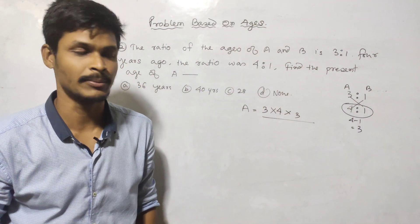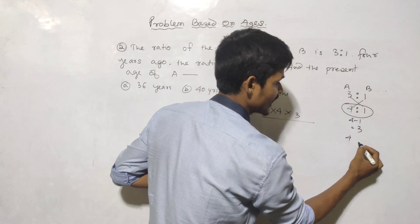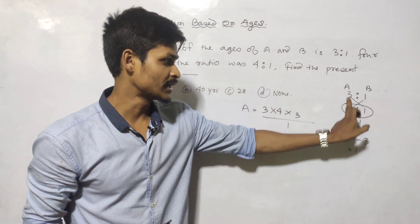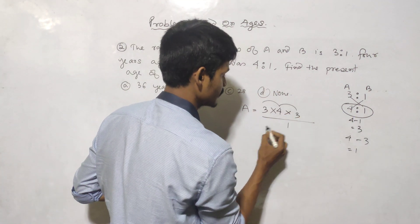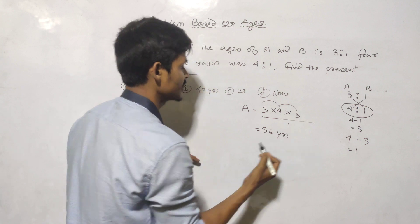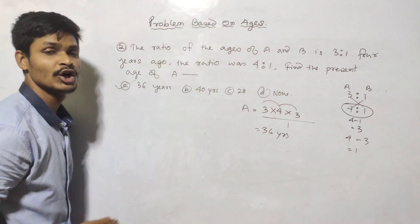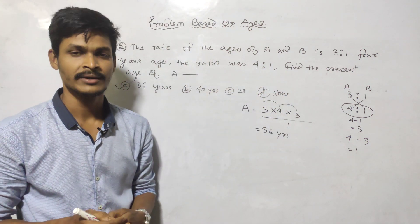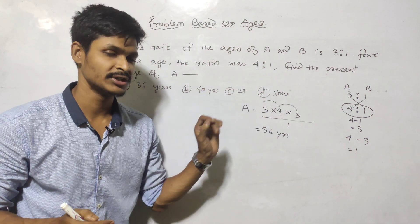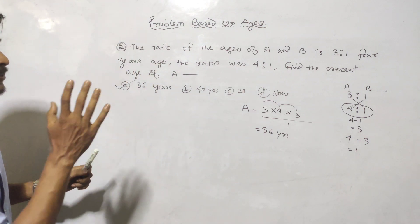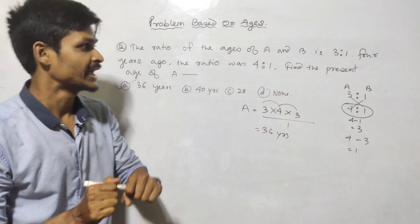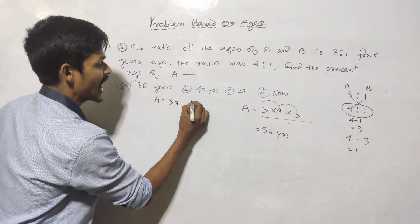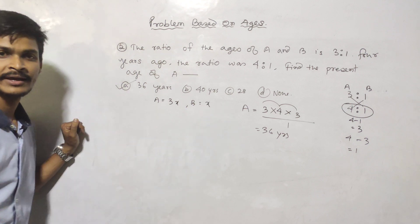We use cross multiplication: 3 minus 1 gives 36 years. Let A equal 3x and B equal x, meaning A is 3 times B.